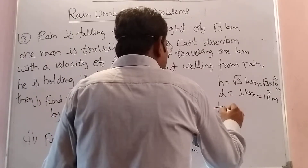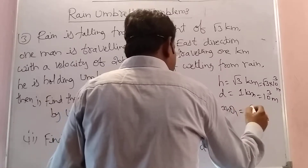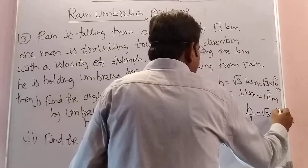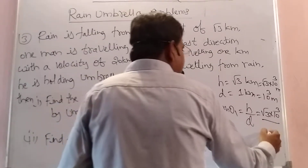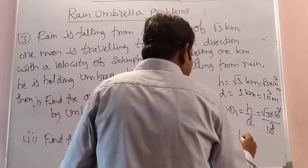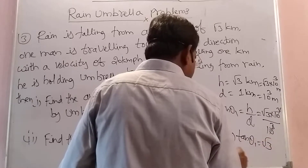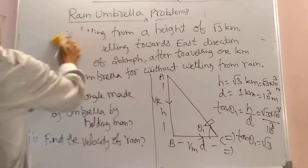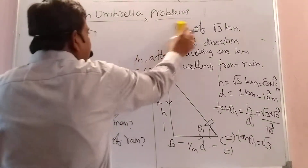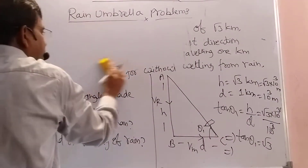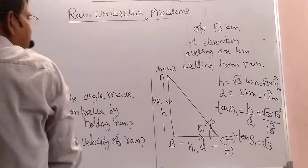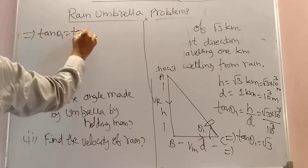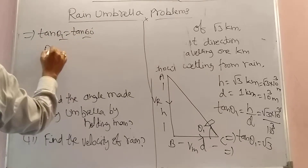Now tan theta 1 equals H by D. What is the height? Root 3 into 10 to the power 3. And the distance is 10 to the power 3. Now tan theta 1 equals root 3. I am writing this as tan 60 equals root 3. This implies tan theta 1 equals tan 60 degrees, therefore theta 1 equals 60 degrees.